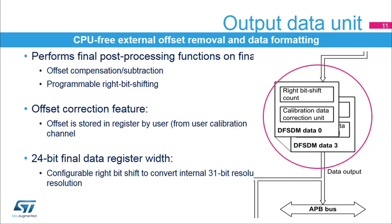The correct configuration must ensure the final data length fits into the 31-bit width, which is the resolution of the internal integrator. The width of the data coming from the digital filter must also be taken into account. The output data unit adjusts the final data before they are written to the final data register. An offset value that will be automatically subtracted from the data result for each channel can be defined in the offset register, determined using a calibration procedure programmed in user firmware. The maximum resolution of the final output data register is 24 bits, but the internal resolution can go up to 31 bits. A right-bit shift of the data, configurable from 0 to 31 bits, is available to provide the final data result with the required width without overflowing the 24-bit output register.